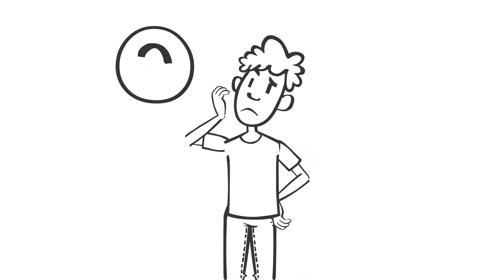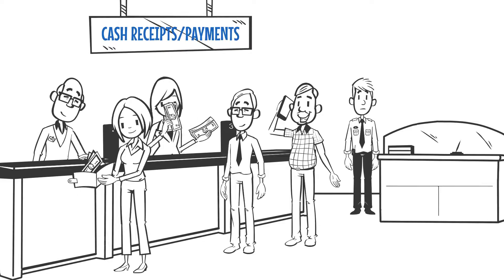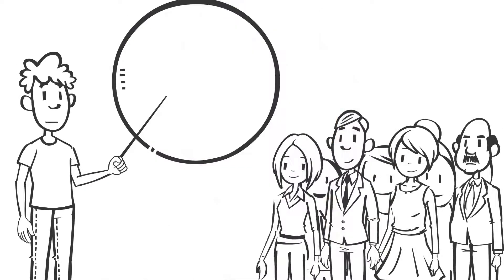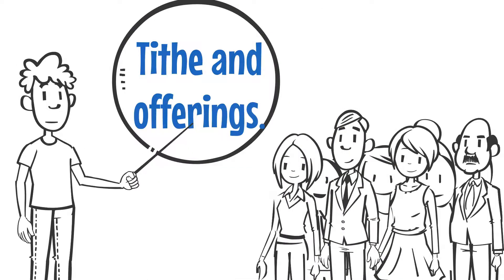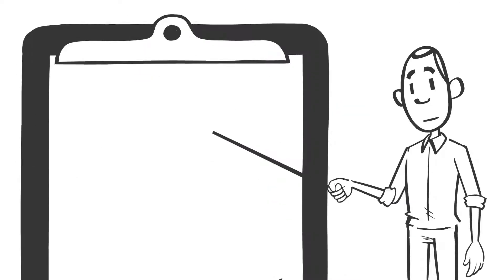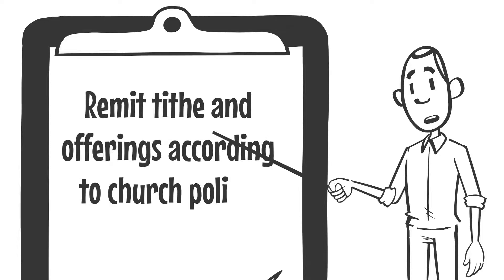What else do you need to make your house church sustainable? Empower each member to generate livable incomes. Help each member to be faithful in tithes and offerings, and remit tithes and offerings according to church policy.